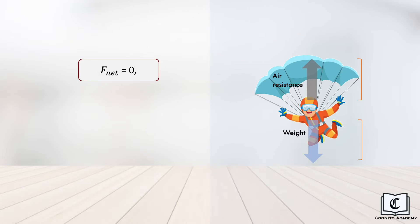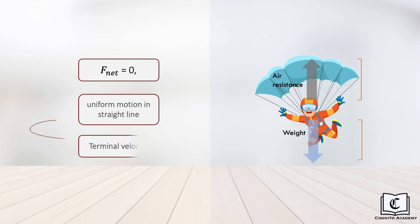Applying Newton's first law, the parachutist will continue his state of uniform motion in a straight line, which explains why he is falling at a constant terminal velocity.